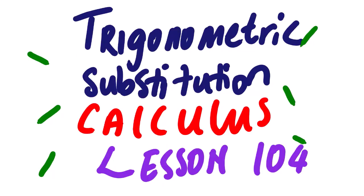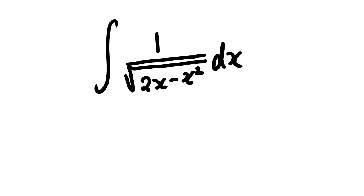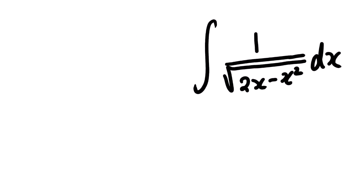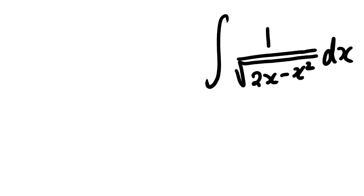Today's lesson we are going to look at trigonometric substitution, calculus lesson 104. We need to find the integral of 1 over square root of 2x minus x squared dx using trigonometric substitution. Now we can see that this form is not simple for us to actually see which substitution we need to use, so we need to first complete the square.